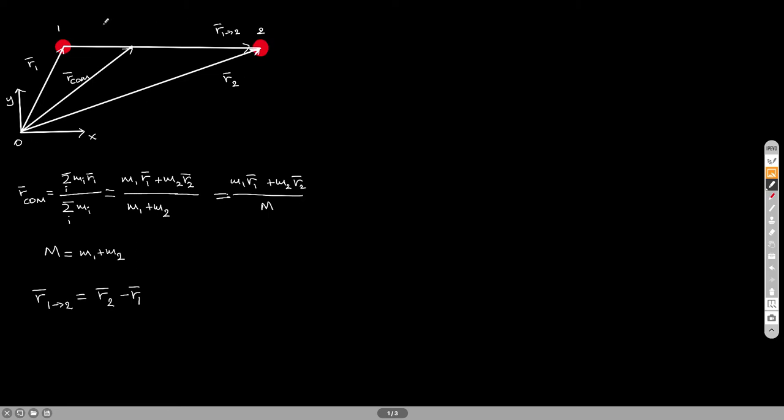Now, when your system is only two objects, the position vector of the center of mass can be found by doing M1 R1 plus M2 R2 over big M, where big M is the sum of the two masses. And I have also included another equation here for the relative position vector from 1 to 2, this is equal to R2 minus R1.